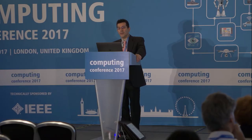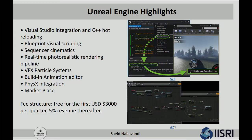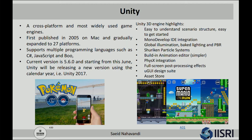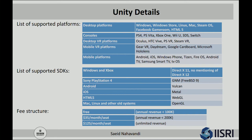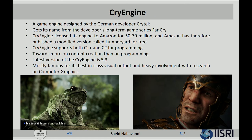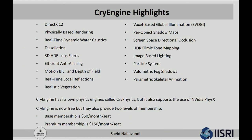CryEngine is developed by German company Crytek and is a very capable games engine. Highlights include DirectX 12, physics-based rendering, real-time dynamic water, tessellation, and 3D HDR lens flares. So that was some background on games engines, because later on you will see that a lot of the applications we have developed use different types of games engines and devices.